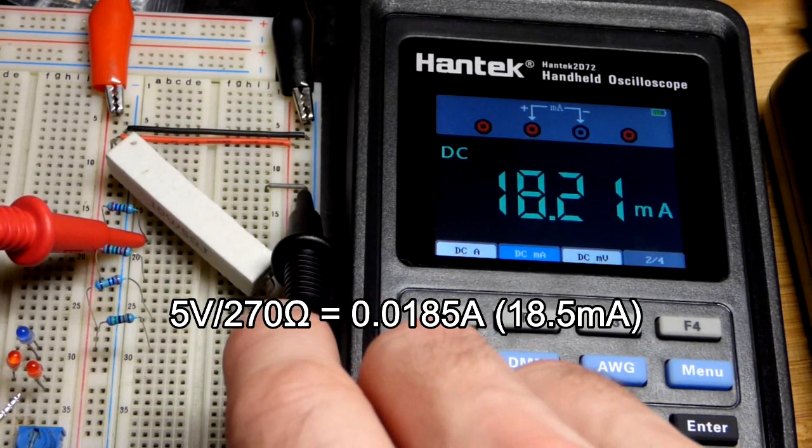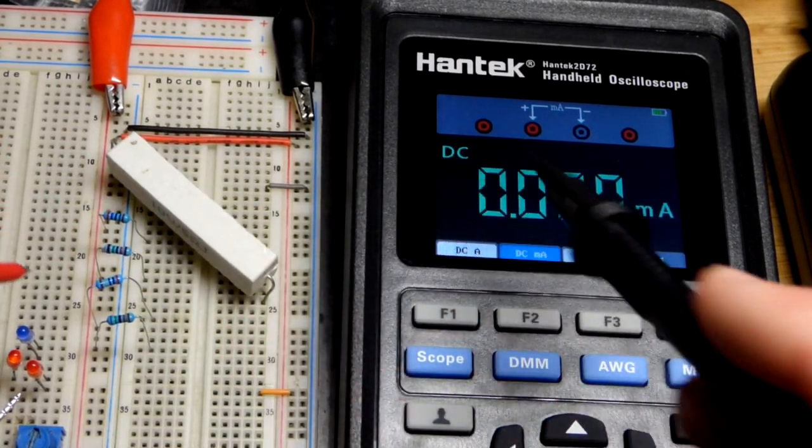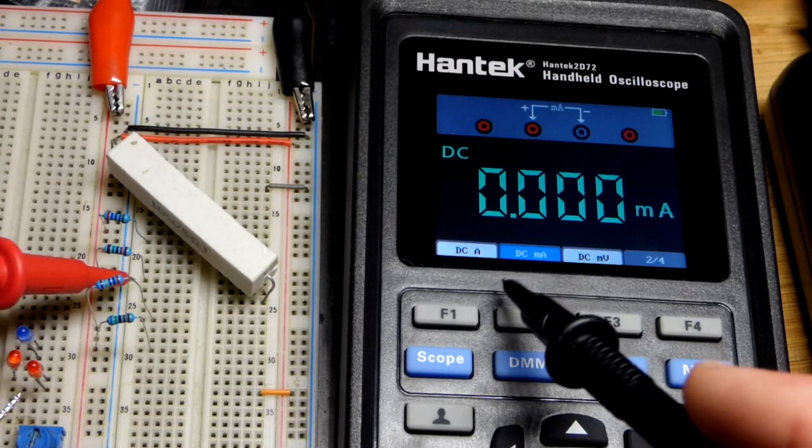So that's a 270 ohm resistor. And approximately 18 milliamps is what we should expect. And of course these are... We're kind of pushing on things, so it's bouncing around a little bit.